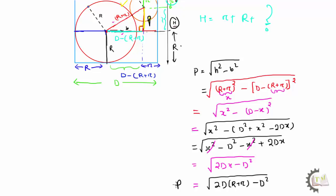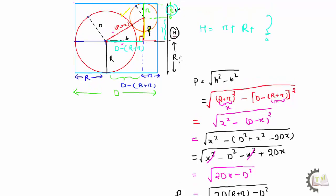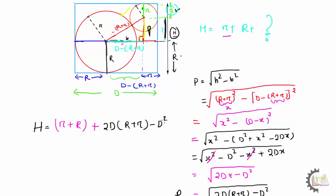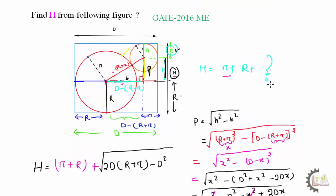Now we have found the value of P, which is that vertical length. Therefore, H equals R plus r plus P, which is R plus r plus the square root of 2D(R plus r) minus D squared. This is the answer to the 2016 mechanical engineering paper question. It is completely geometric, and you should have some knowledge of geometry before solving this problem.